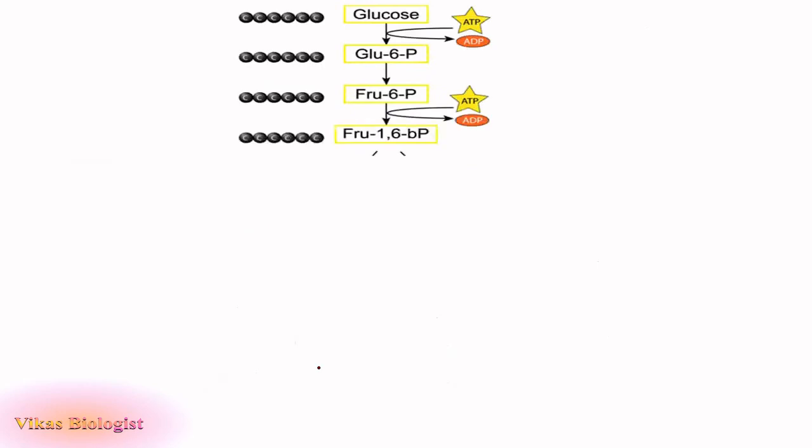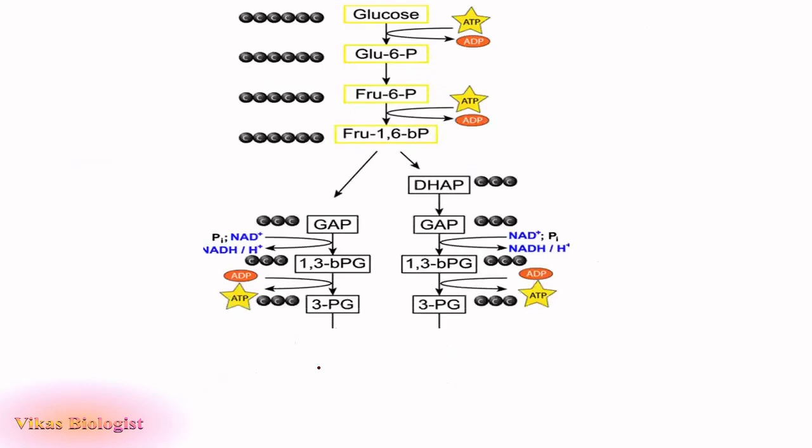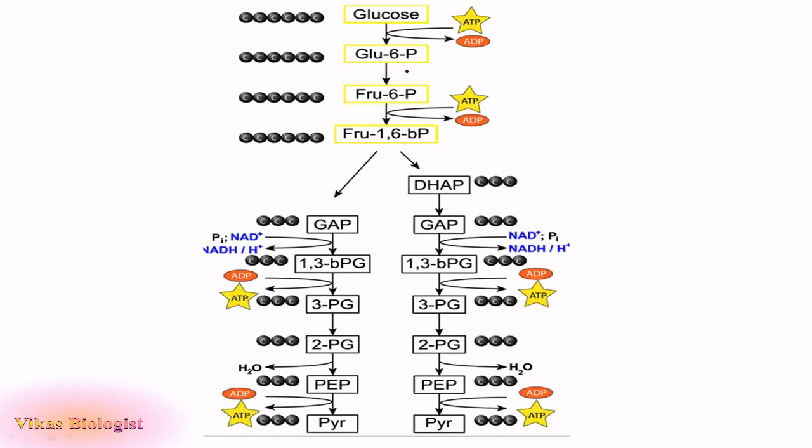The entire reaction can also be understood by this flowchart where you can see glucose is converted to dihydroxyacetone phosphate followed by glyceraldehyde 3-phosphate in the preparatory phase. The diagram shows 2 ATP utilization in the preparatory phase followed by 4 ATP generation and 2 NADH generation in the payoff stage.